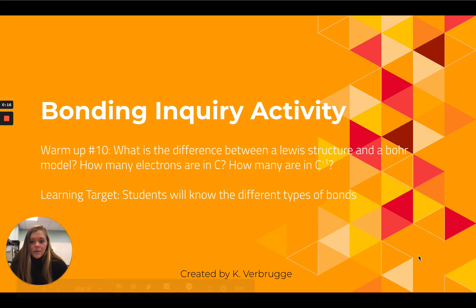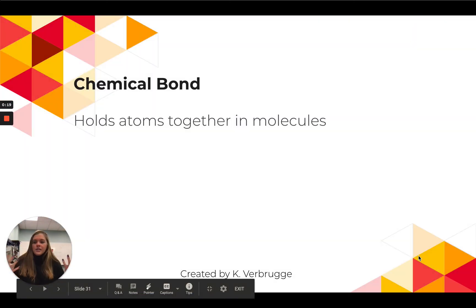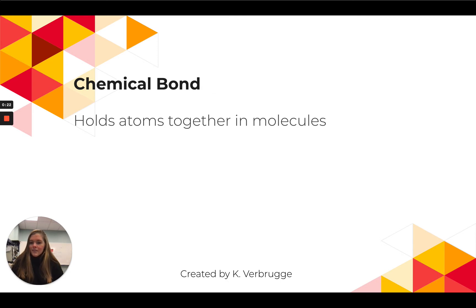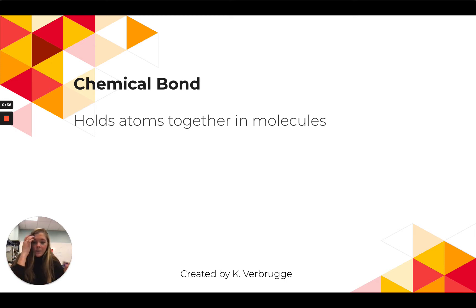As review from last unit, remember that a chemical bond is something that holds atoms together in molecules — an attraction between two things that pulls two atoms together. And remember from unit two, a chemical bond cannot be broken physically. It has to be chemically broken down by something. You can't just break a chemical bond with your hands.